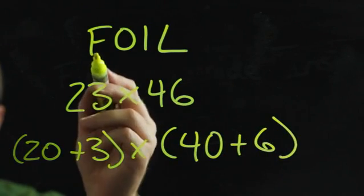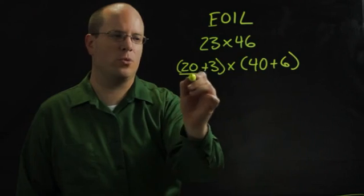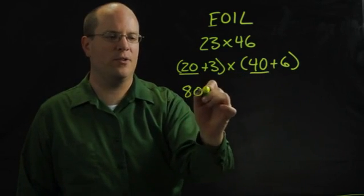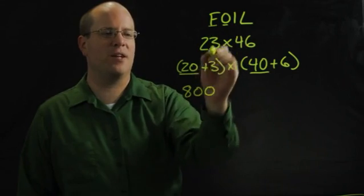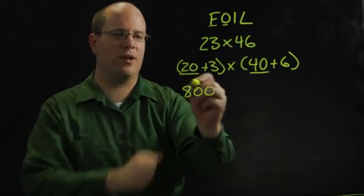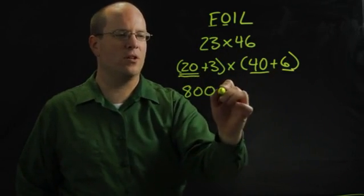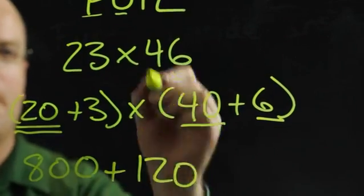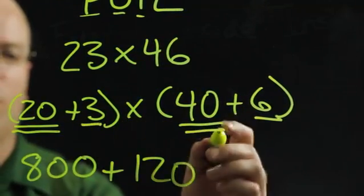And then I'm going to multiply the first numbers. 20 times 40 is 800. The outside numbers, it means these two out here, 20 times 6 which is 120. The inside numbers which is 3 and 40.